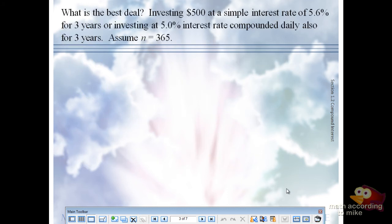Let's try a different set of examples. What is the best deal? Investing $500 at a simple interest rate of 5.6% for three years or investing $500 at 5% compounded daily also for three years.